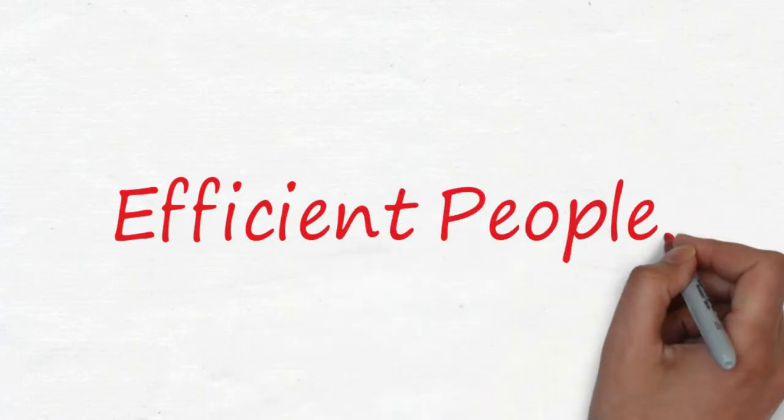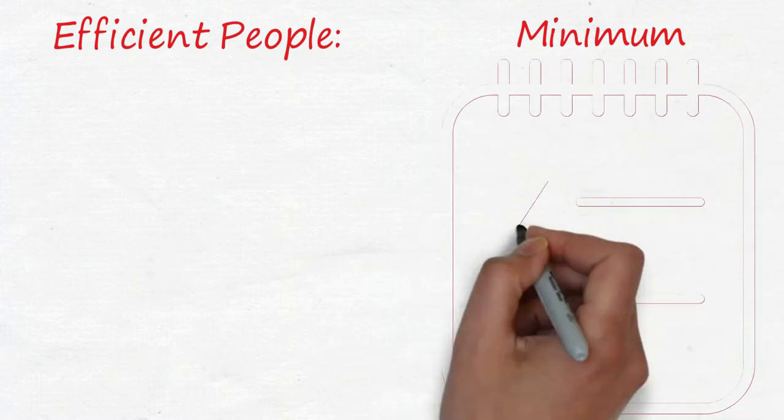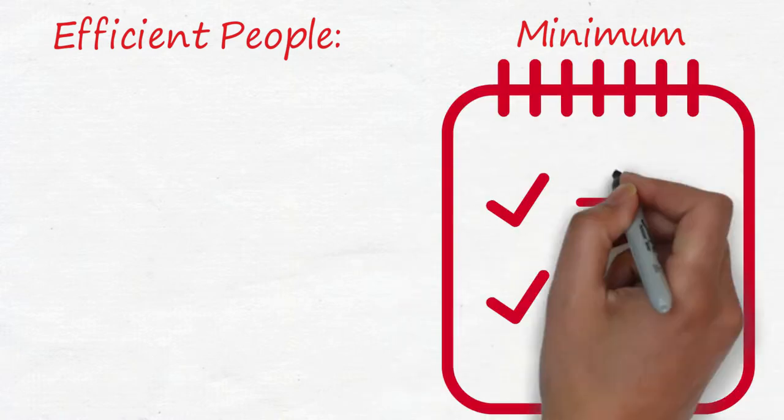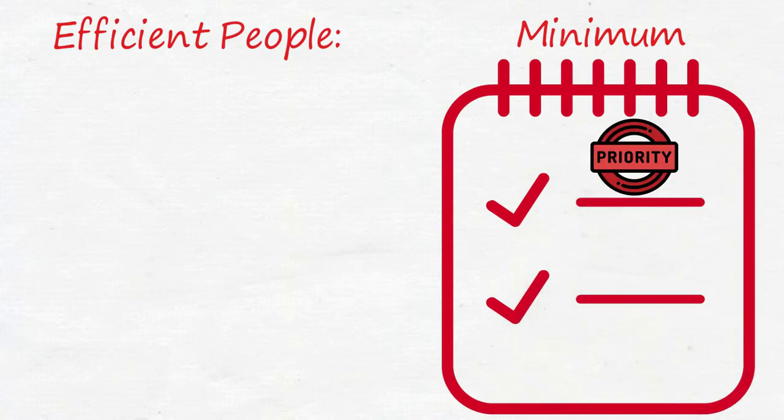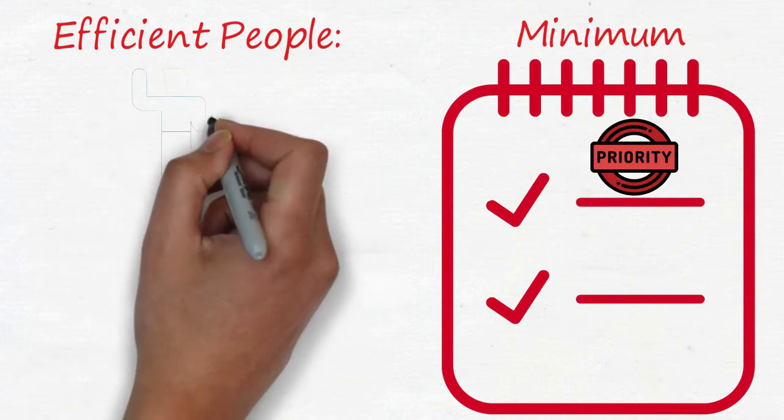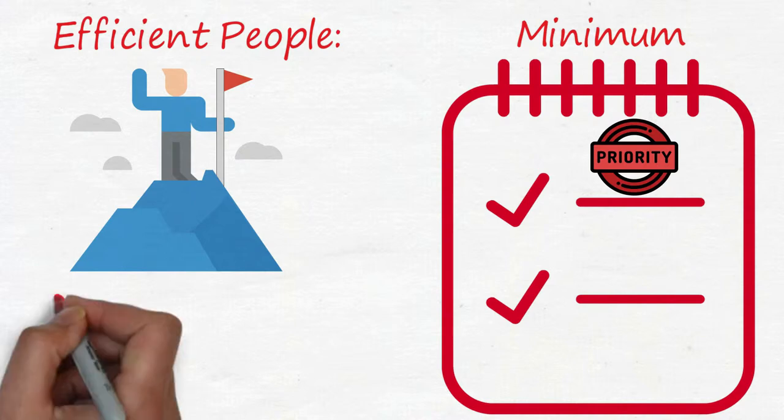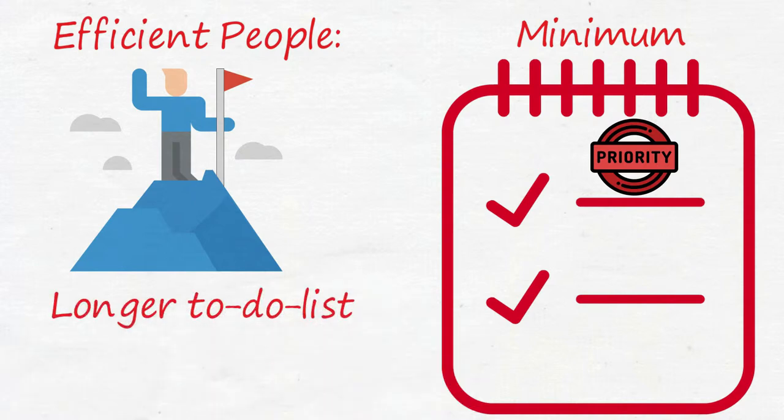What do efficient people do? They try to reduce their number of tasks to minimum. Their list contains much fewer tasks, and those tasks are arranged according to their priorities. They have only one or two major tasks every day and set their goals. Once they achieve the goal, they switch to another task. It is because they understand that completing a longer to-do list doesn't mean higher efficiency.